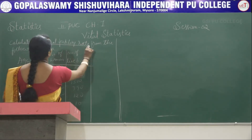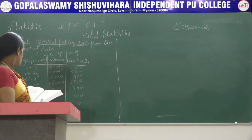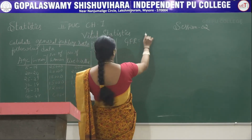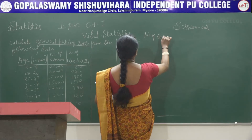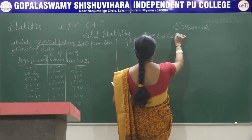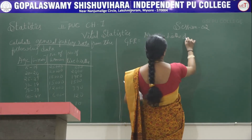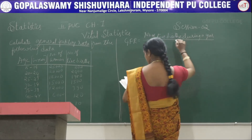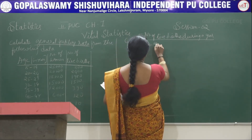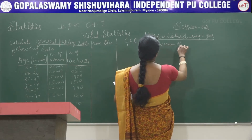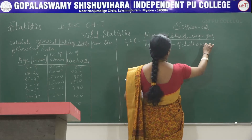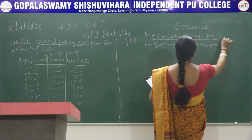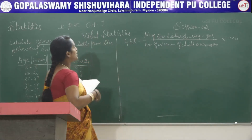For this data, we have to find the General Fertility Rate (GFR). The formula for GFR is: GFR = (Number of live births during a year) divided by (Number of women of childbearing age) multiplied by 1000.